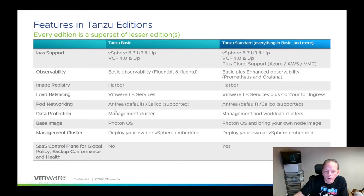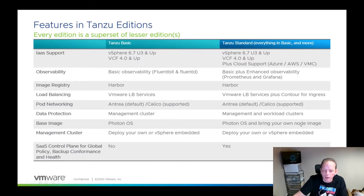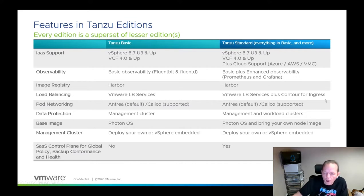For networking, the options are essentially the same between both editions. For data protection, Tanzu Standard includes a more robust level of data protection and backup using the included TMC service. For the base image, both editions use Photon OS; however, Tanzu Standard offers the option of bringing your own node image.